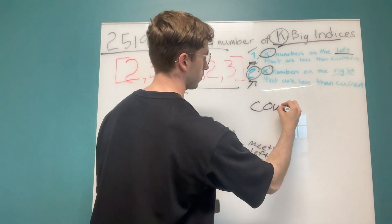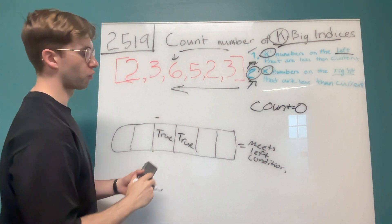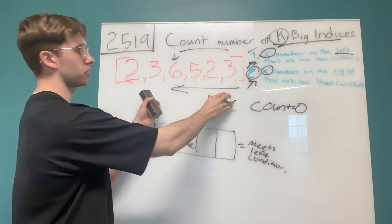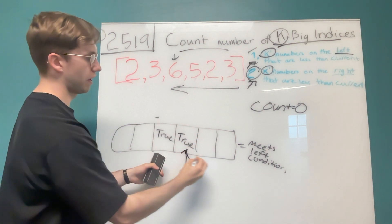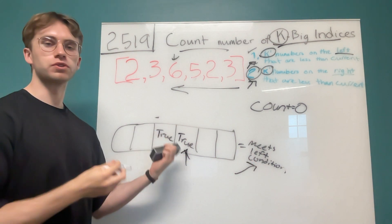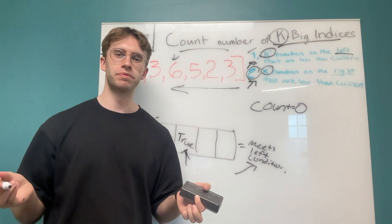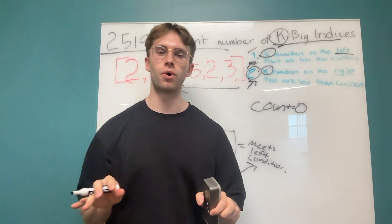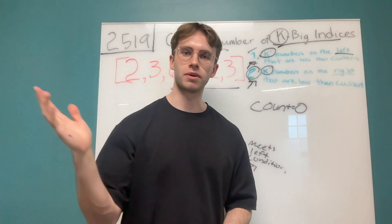Initially the count is zero. Whenever we meet the criteria for the right condition, we check in our array whether that index also met the left condition. If so, we increment the count by one. If this doesn't make much sense, the code really helps simplify things, so let's get straight to coding.